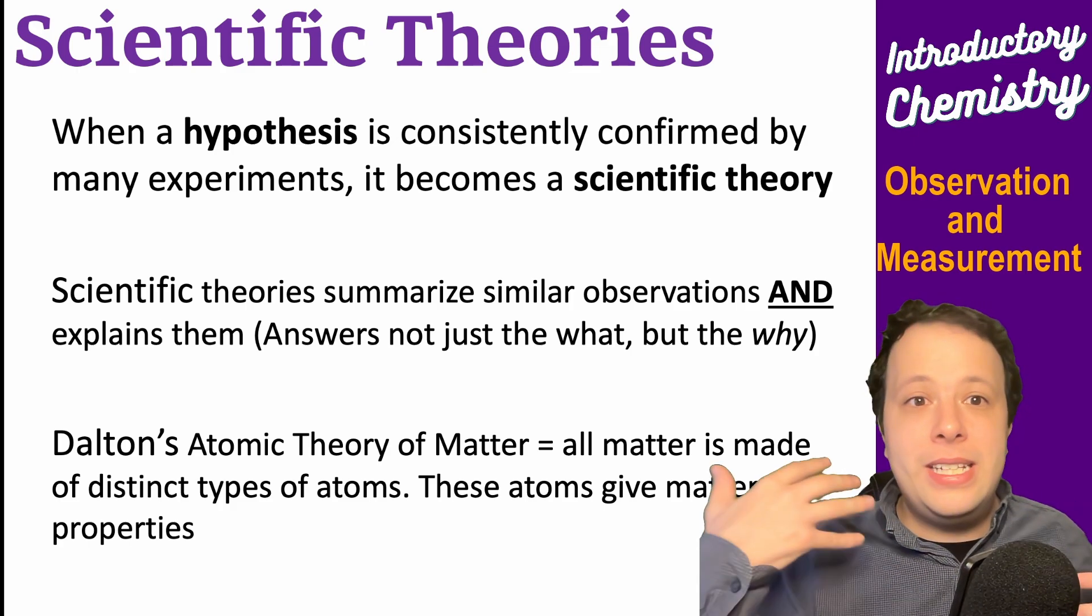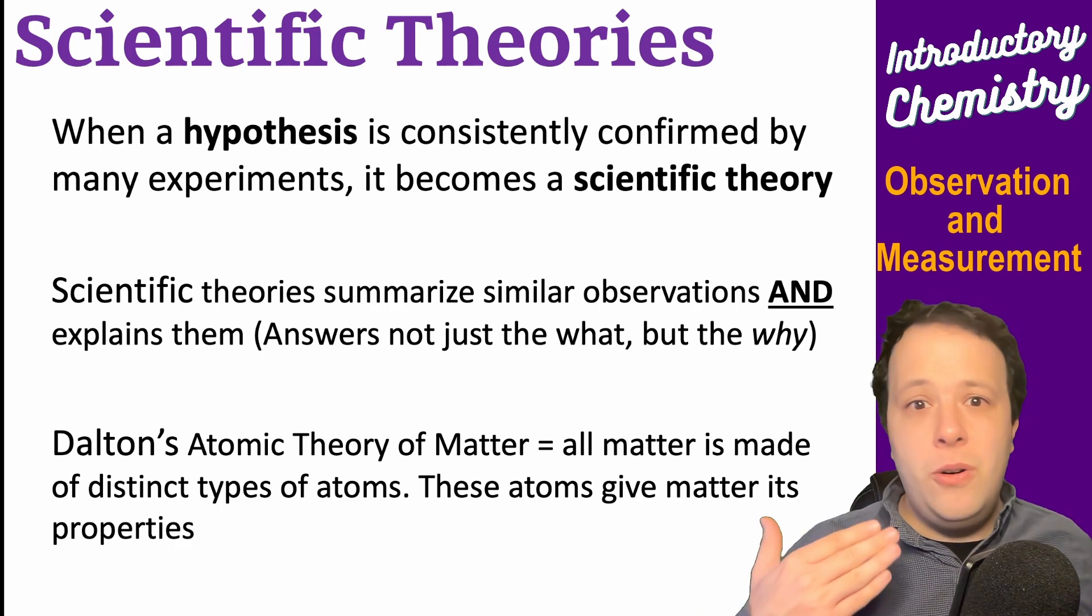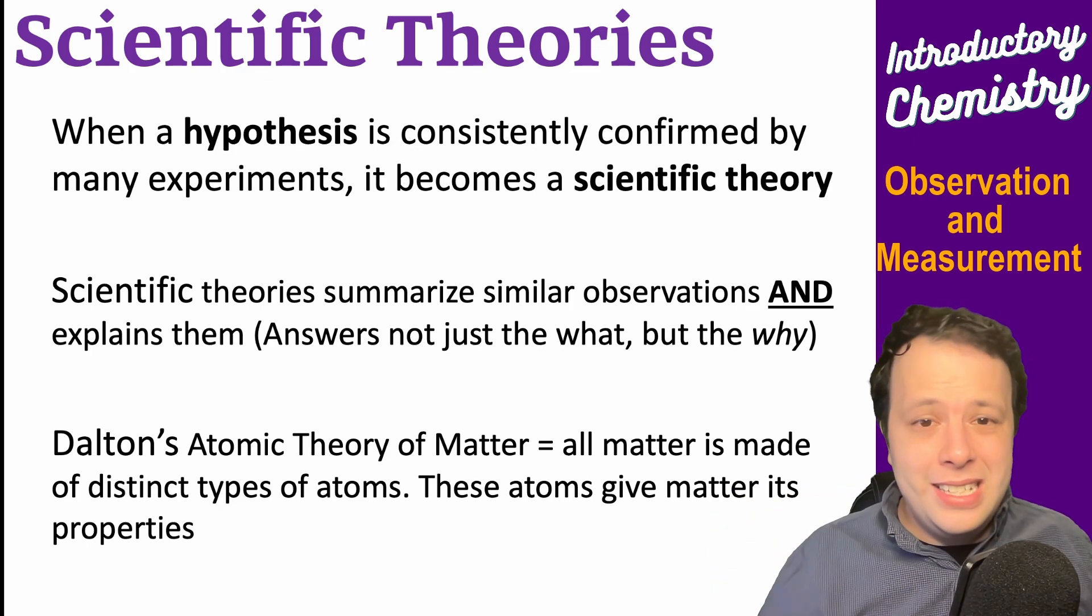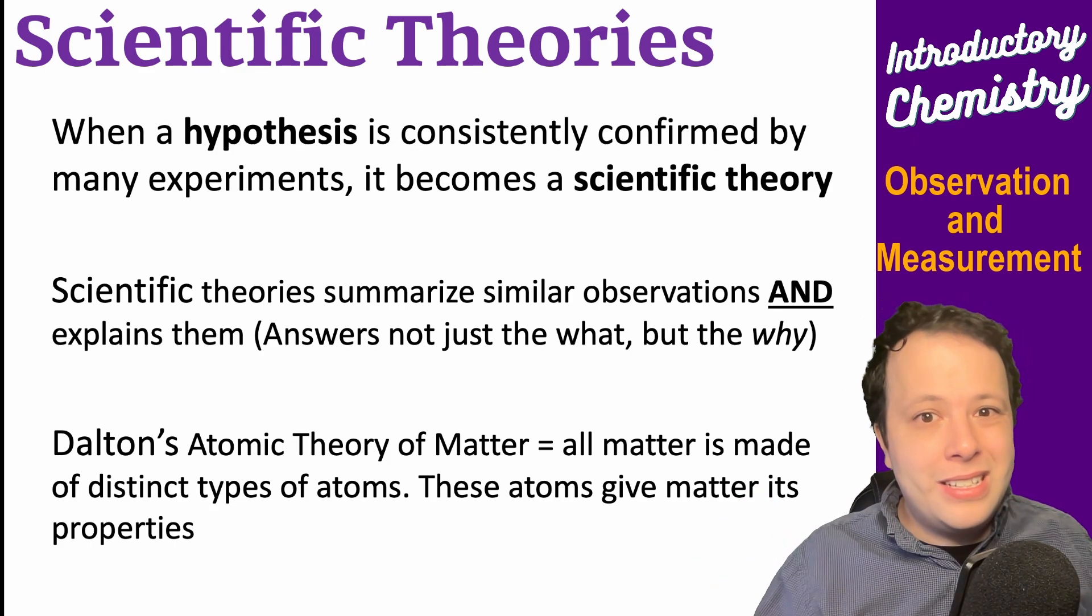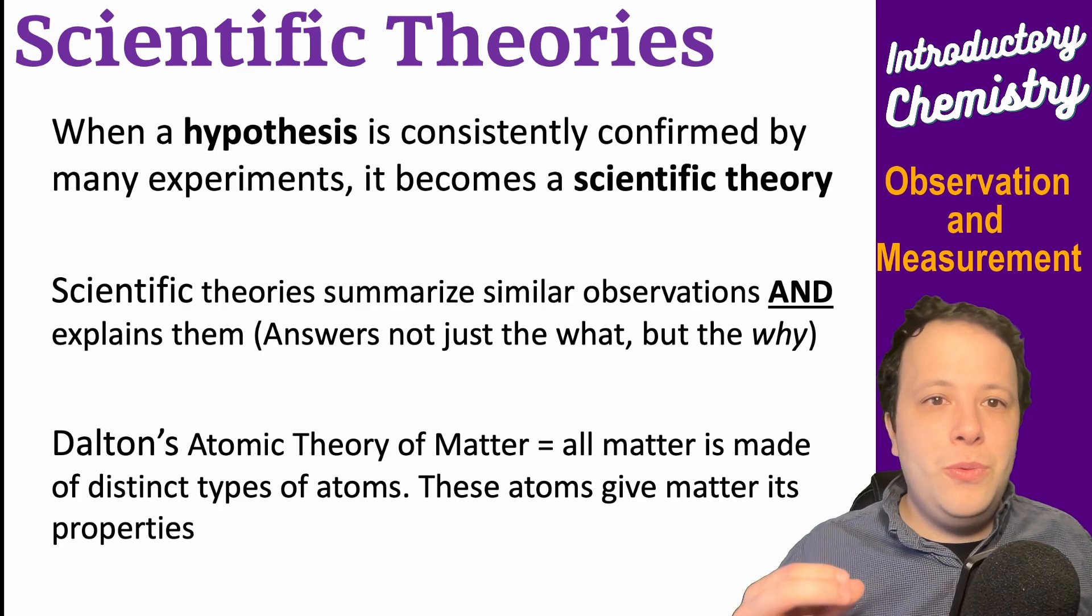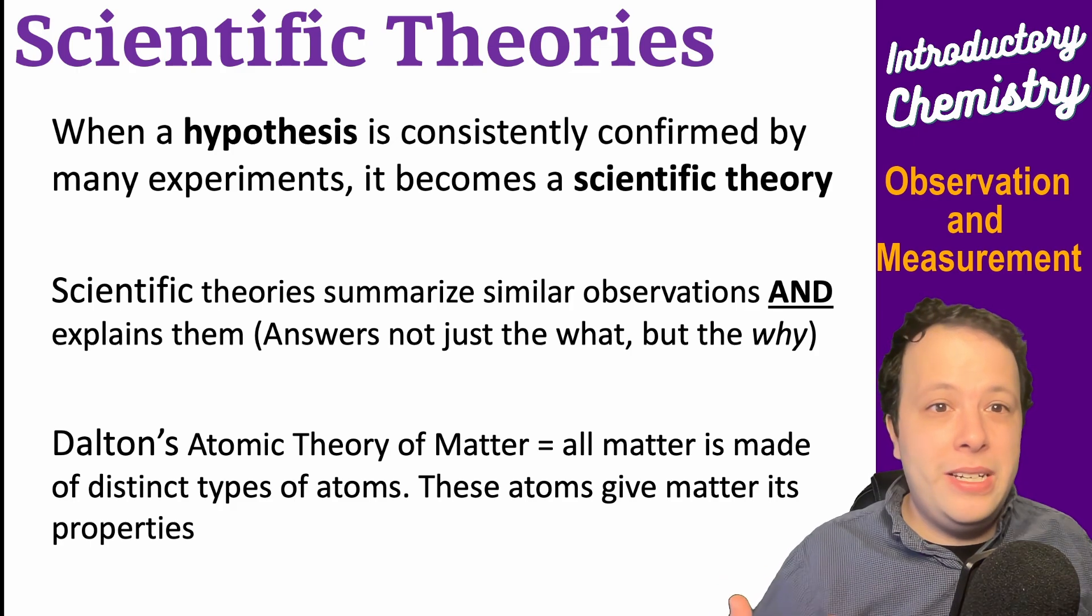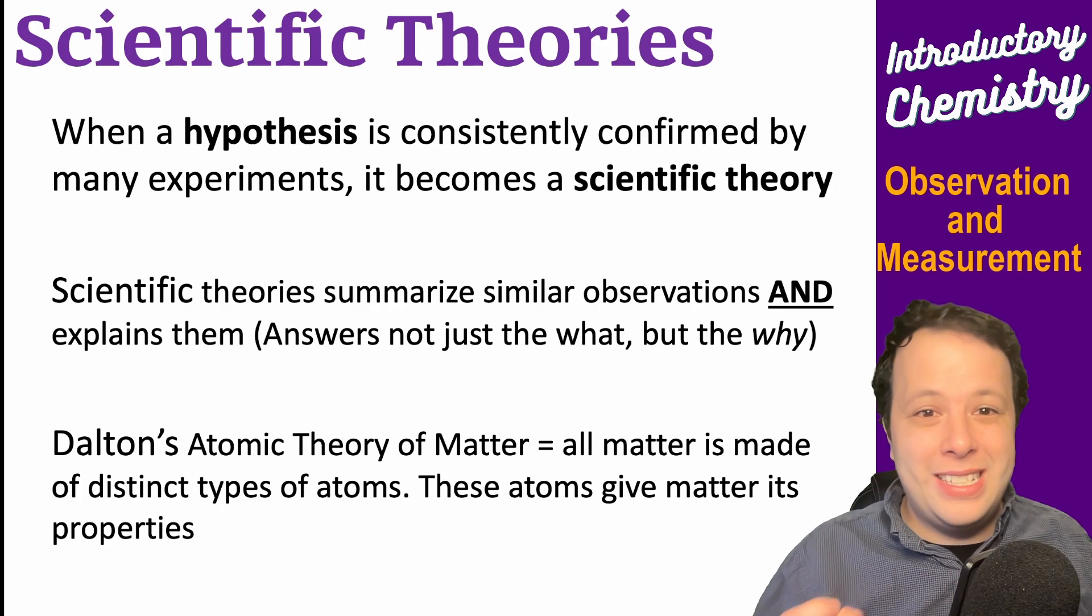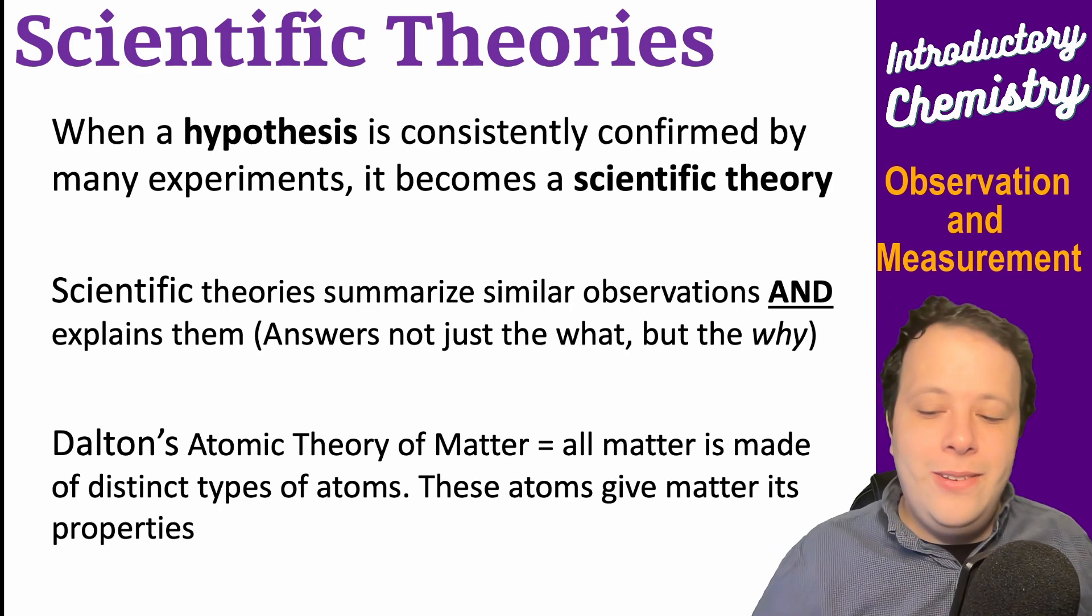We don't always have laws - sometimes we also have scientific theories. When it comes to a theory, this is something where I've seen this happen many, many times over. My hypothesis that I've had is consistent. I've been proven this the same way for 10 years, but maybe it's not quite a law because there's always a chance it could be disproven, but it's consistent. A theory is something that we constantly use to explain something. Those observations can be explained. It answers the what and the why.